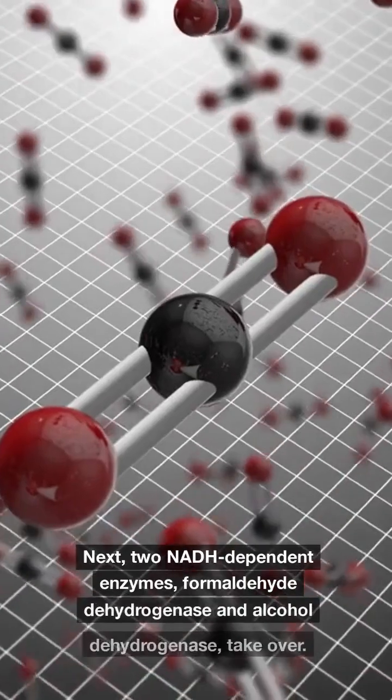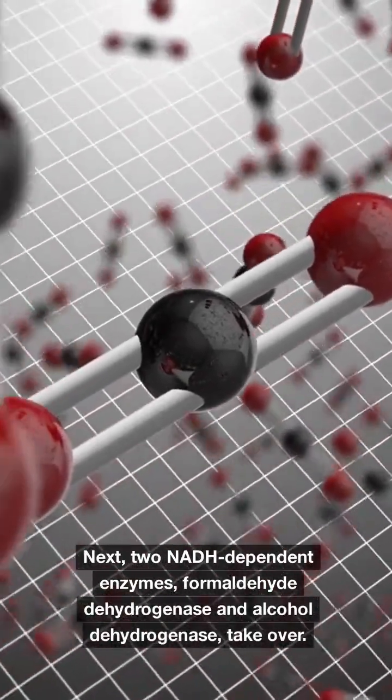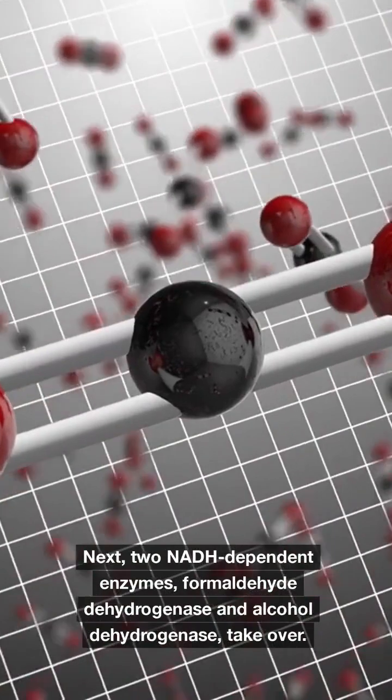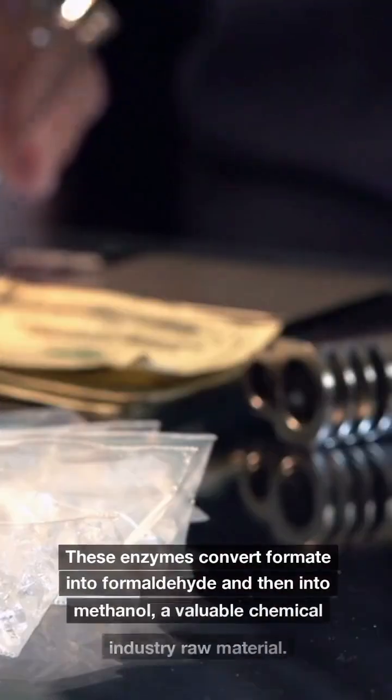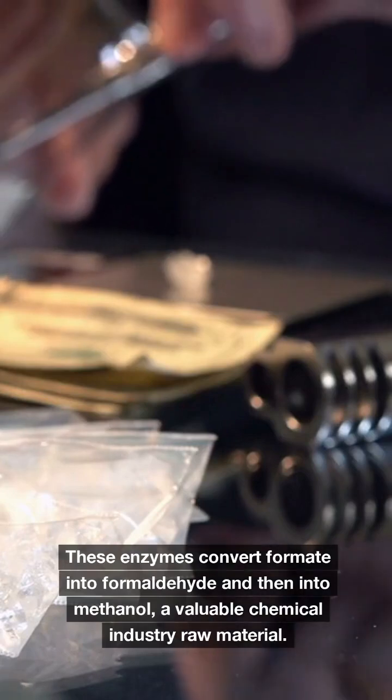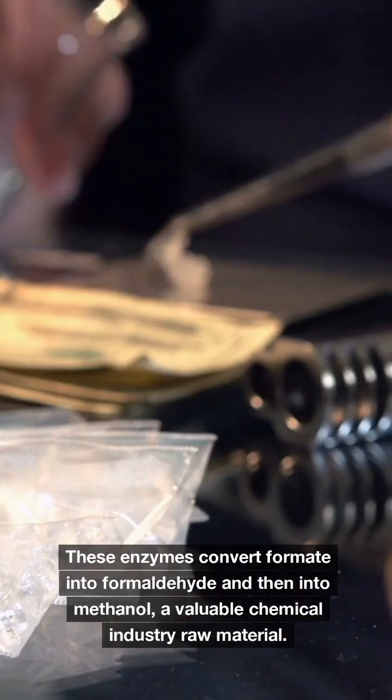Next, two NAD-dependent enzymes, formaldehyde dehydrogenase and alcohol dehydrogenase, take over. These enzymes convert formate into formaldehyde and then into methanol, a valuable chemical industry raw material.